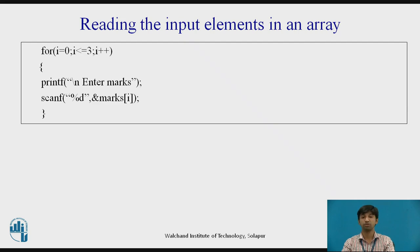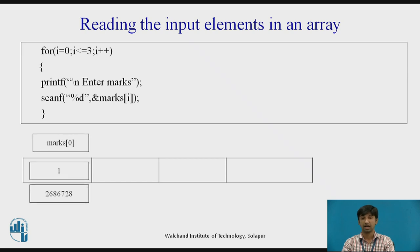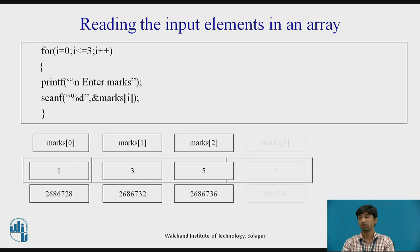This is the last time through the loop which is a good thing because there is no array element like marks of 4. So in scanf function we have used the address of operator, ampersand, on the elements marks of i of the array. Just we have used it earlier on other variables, ampersand rate for example. In so doing we are passing the address of this particular array element to the scanf function rather than its value.